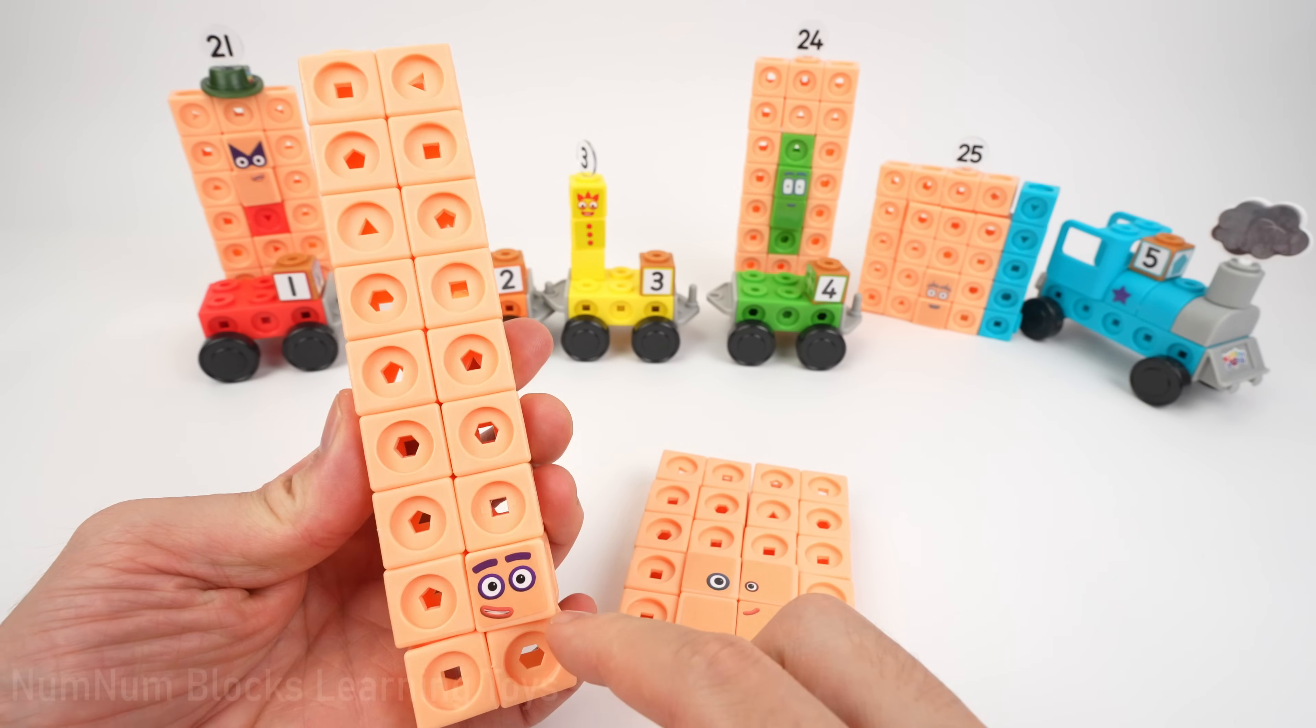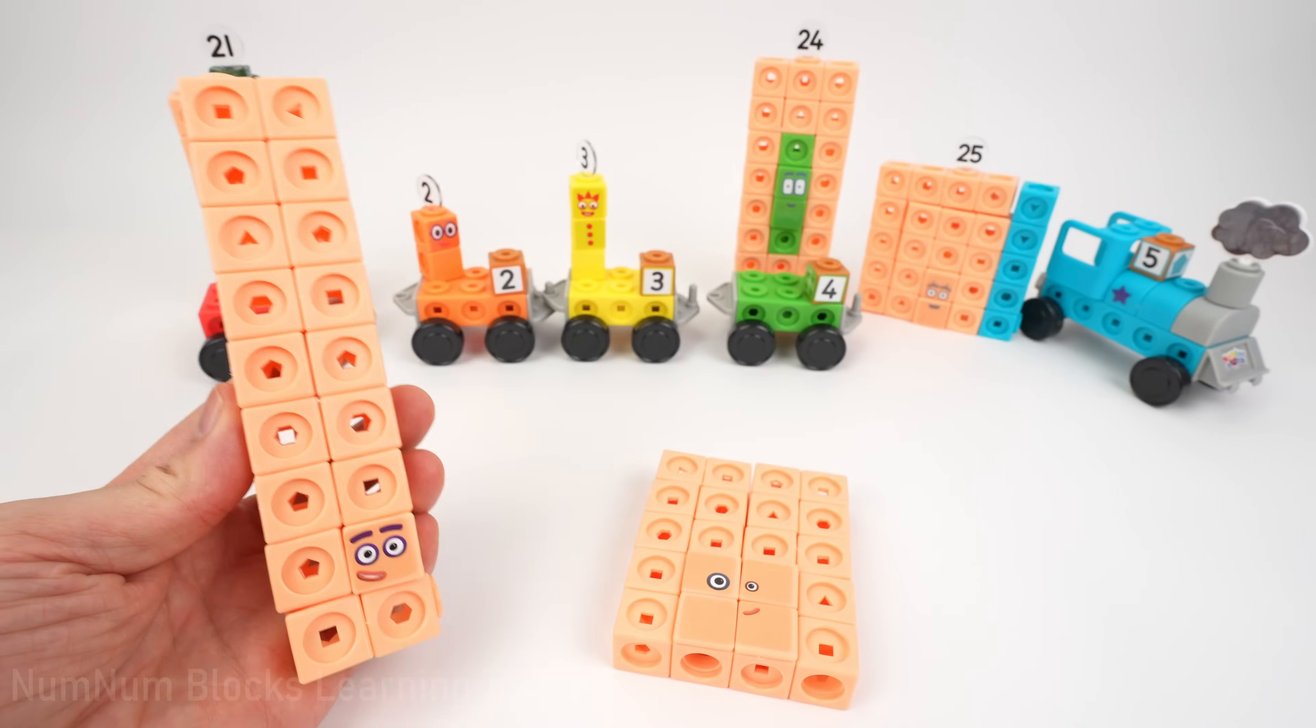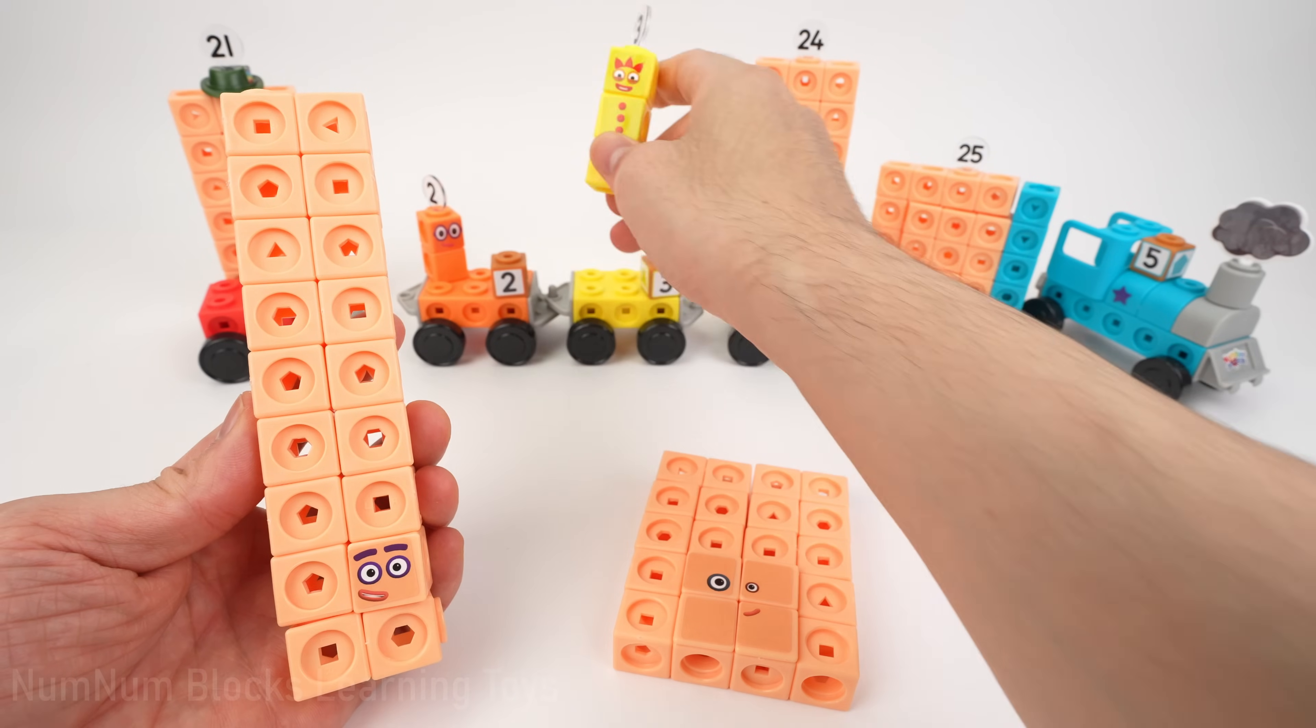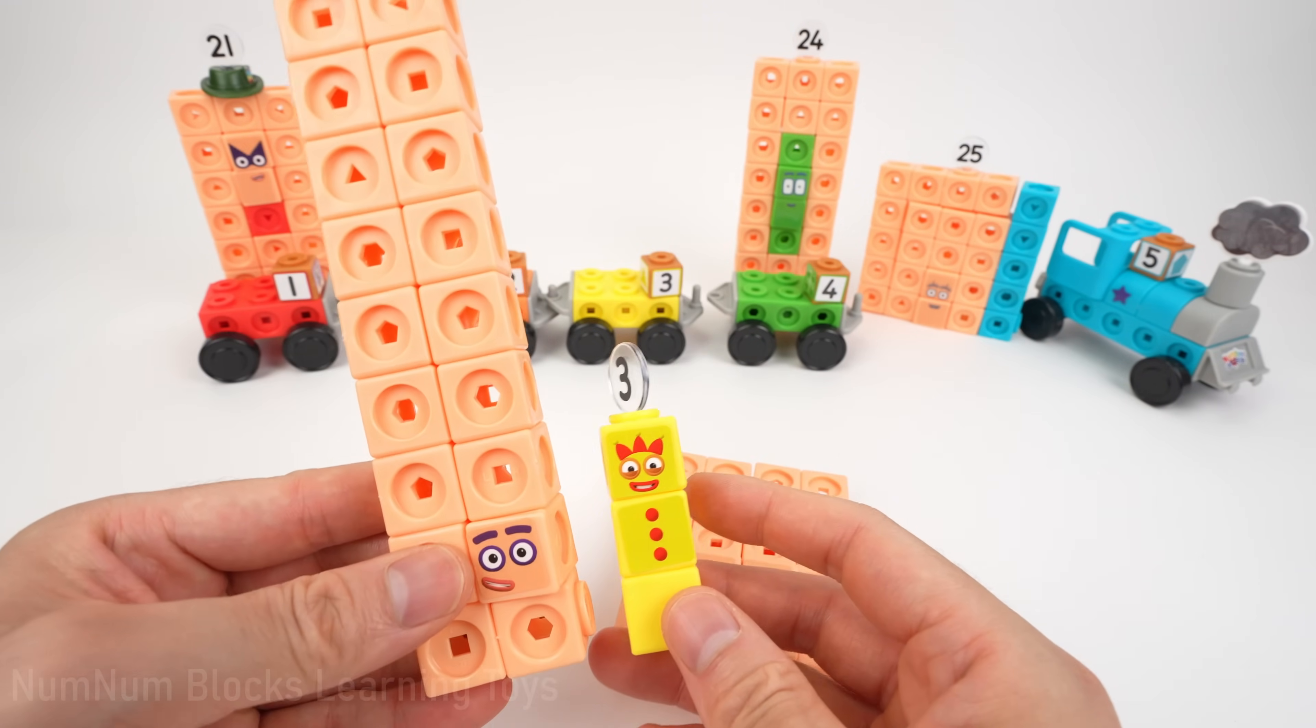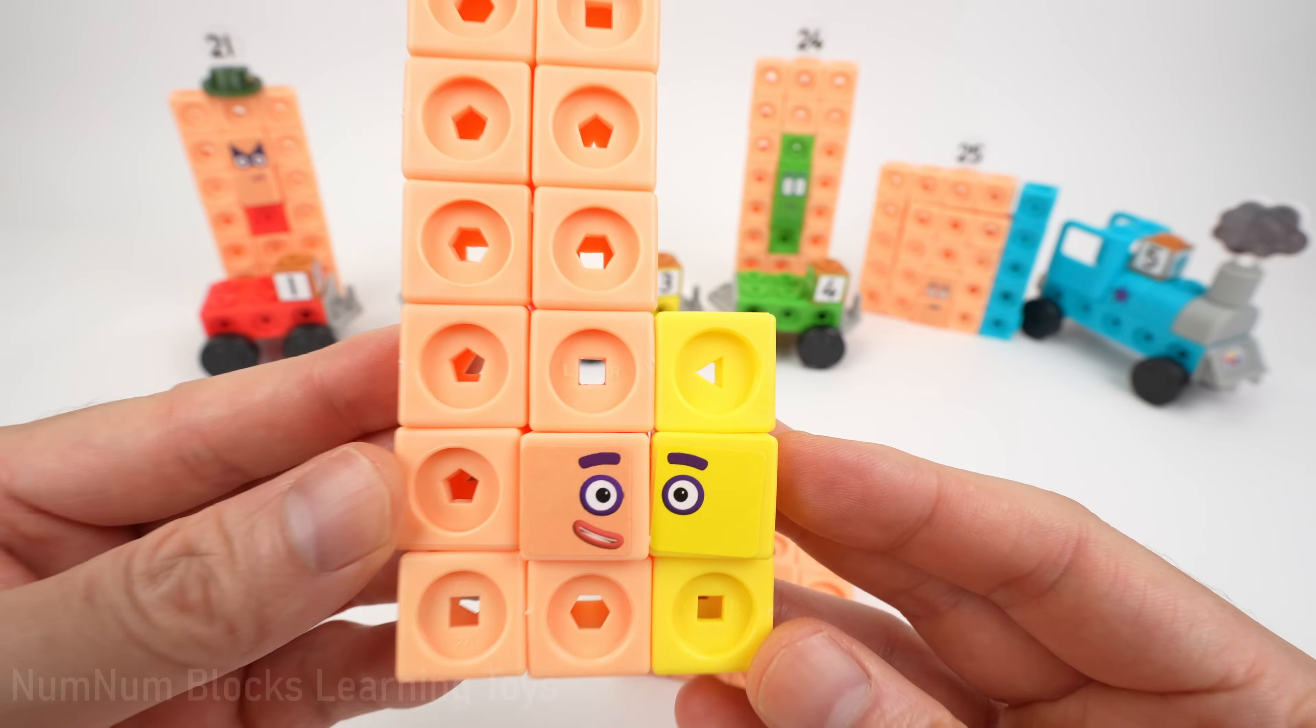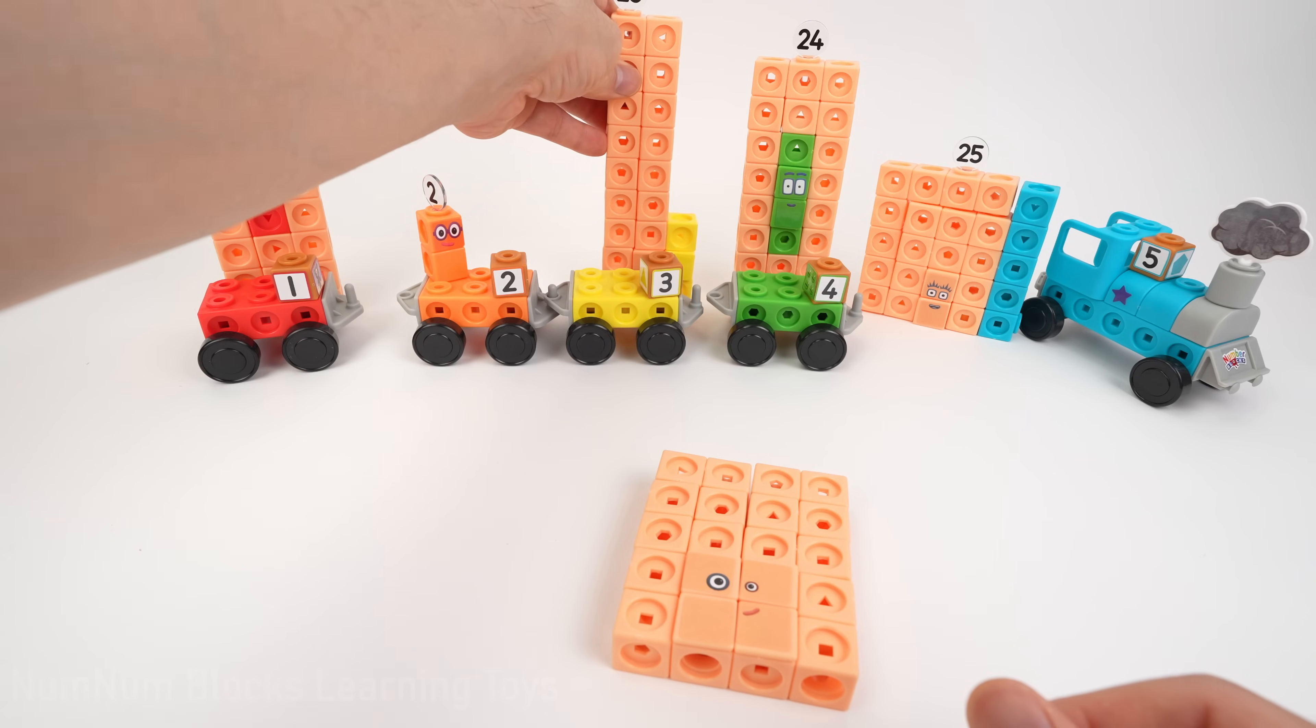Let's take a look at the tall number block. It's a two by ten rectangle. This is supposed to be 23. What number do we add to this number block to get to 23? We add the number 3. 20 plus 3 is 23. Look, it's 23. 23 is the first prime number in the 20s. Let's place 23 behind the number 3 train.